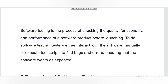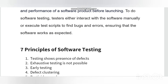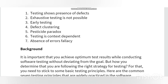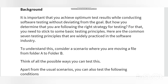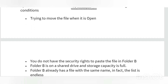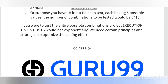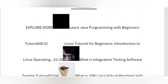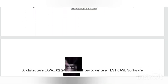Hello friends, welcome back to my channel. Today's video is about software testing — seven principles of software testing. Software testing is the process of checking the quality, functionality, and performance of a software product before launching. To do software testing, testers either interact with software manually or execute test scripts to find bugs and errors, ensuring that the software works as expected.